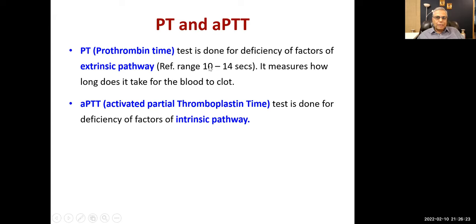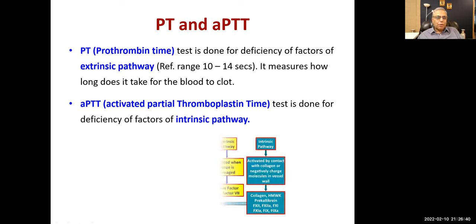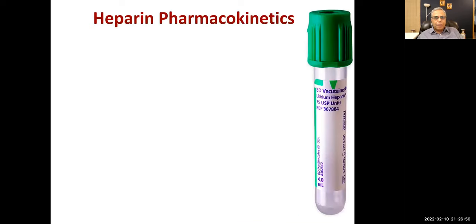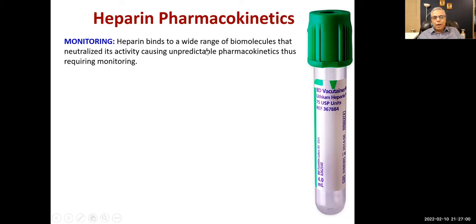Prothrombin time tests for deficiency of extrinsic pathway factors, measuring how long it takes blood to clot. Activated partial thromboplastin time tests for deficiency of intrinsic pathway factors such as factor VIIIa. Heparin pharmacokinetics are unpredictable because heparin binds to a wide range of biomolecules that neutralize its activity — requiring monitoring. Heparin binding to plasma proteins is variable; heparin is also taken up by monocytes and macrophages.